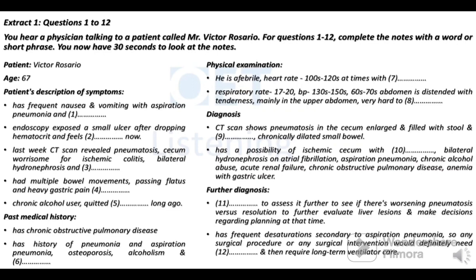Your physical examination shows you are afebrile. Your heart rate is in the hundreds to 120s at times with atrial fibrillation. Respiratory rate is 17 to 20. Blood pressure 130 to 150 over 60 to 70s. Your abdomen is distended with tenderness mainly in the upper abdomen but very difficult to localize. The CT scan shows pneumatosis in the cecum with an enlarged cecum filled with stool and air fluid levels, with chronically dilated small bowel. There is a possibility of ischemic cecum with possible metastatic disease, bilateral hydronephrosis, atrial fibrillation, aspiration pneumonia, chronic alcohol abuse, acute renal failure, COPD, and anemia with gastric ulcer.